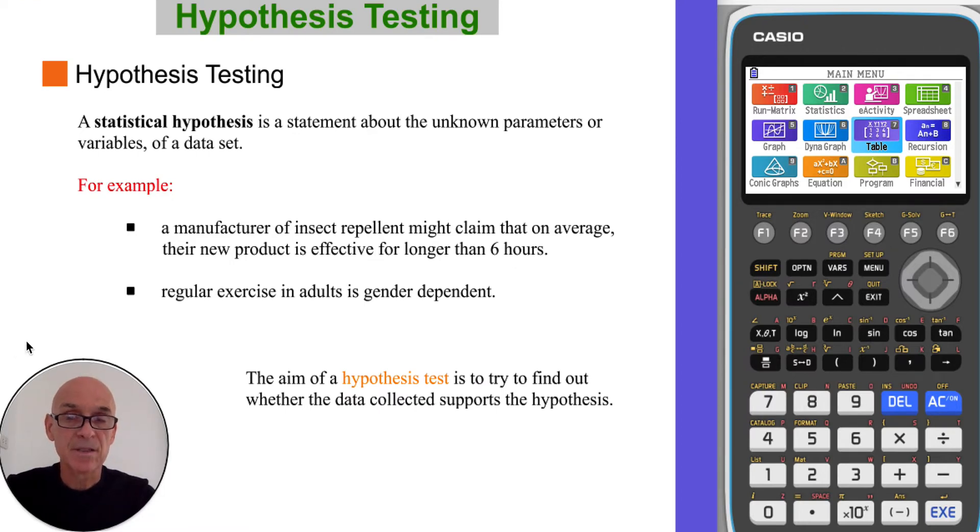So a hypothesis is a statement about the unknown parameters or the variables of a data set. For example, a manufacturer might claim that his new product is effective for longer than six hours. So that's a hypothesis. Or that regular exercise in adults is gender dependent. So that's another hypothesis. So the aim of a hypothesis test is to find out whether the data collected supports the hypothesis.